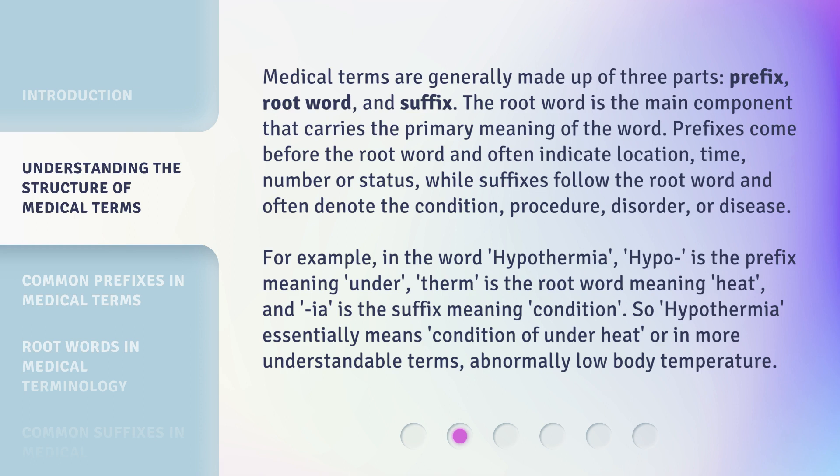For example, in the word hypothermia: 'hypo' is the prefix meaning 'under,' 'therm' is the root word meaning 'heat,' and 'ia' is the suffix meaning 'condition.' So hypothermia essentially means 'condition of under-heat,' or in more understandable terms, abnormally low body temperature.